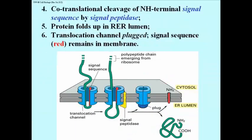Here are the next steps. It's not showing the ribosome here anymore, but it's there. The polypeptide chain is still emerging from that ribosomal large subunit channel and progressing through the translocation channel. At some point, a signal peptidase associated with the endoplasmic reticular membrane associates with the translocation channel and catalyzes cleavage of the amino terminal signal peptide, which remains associated with the ER membrane.